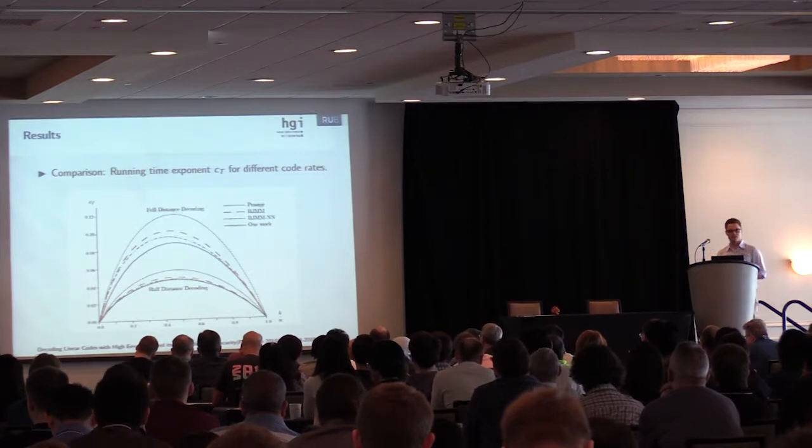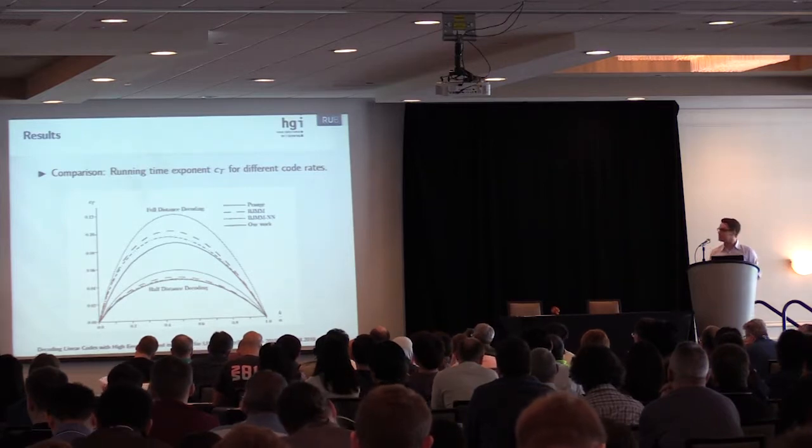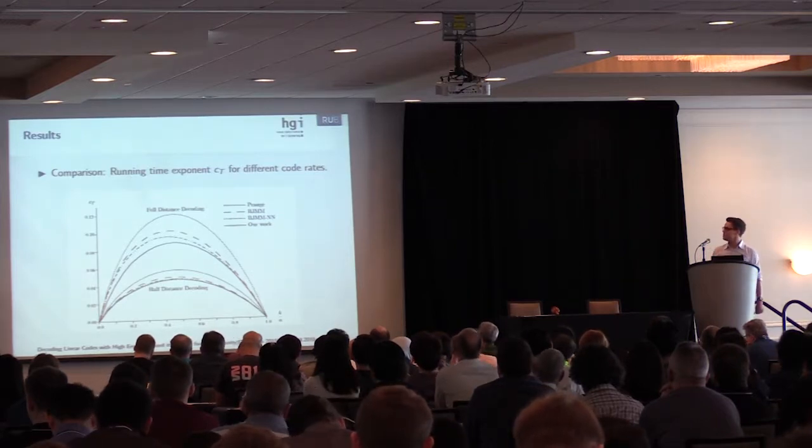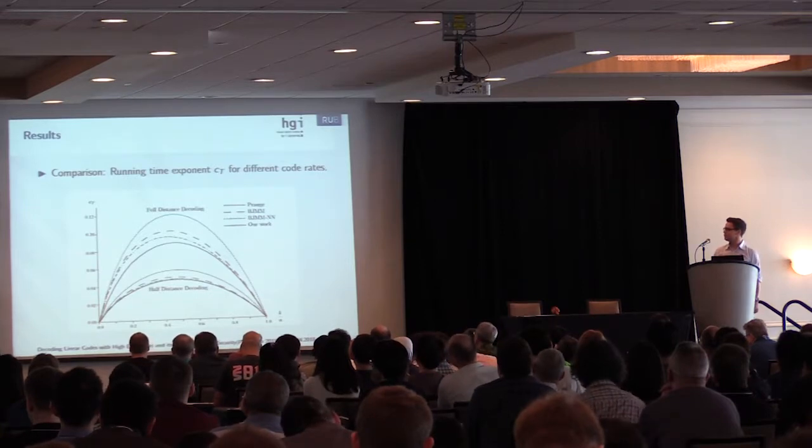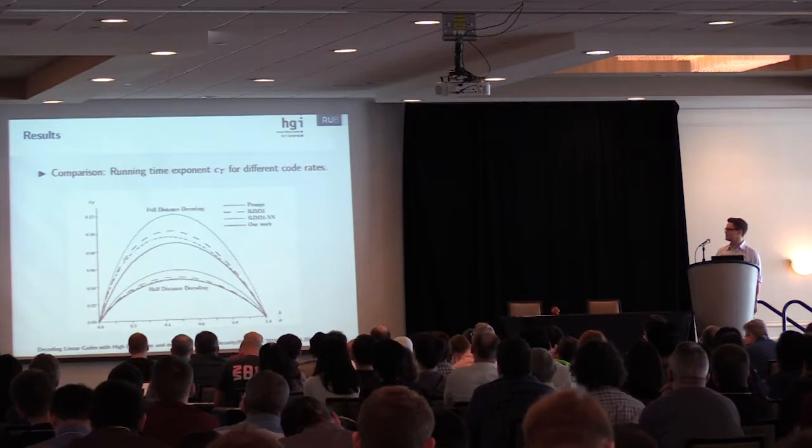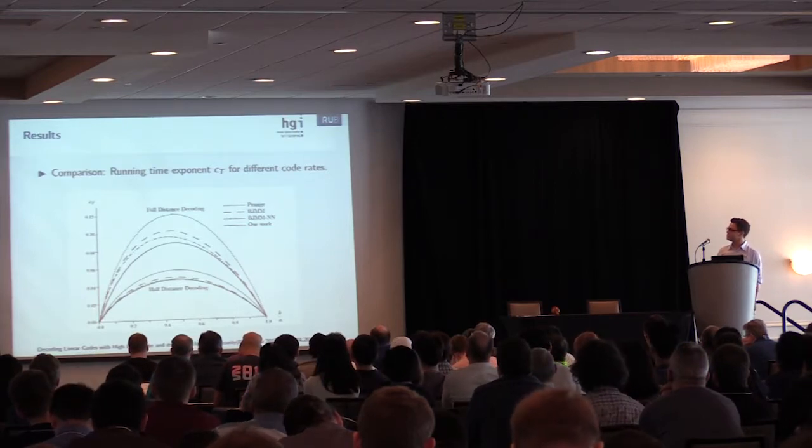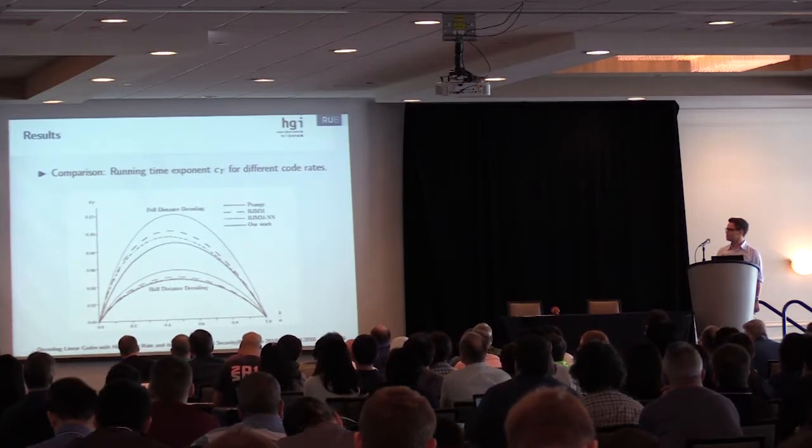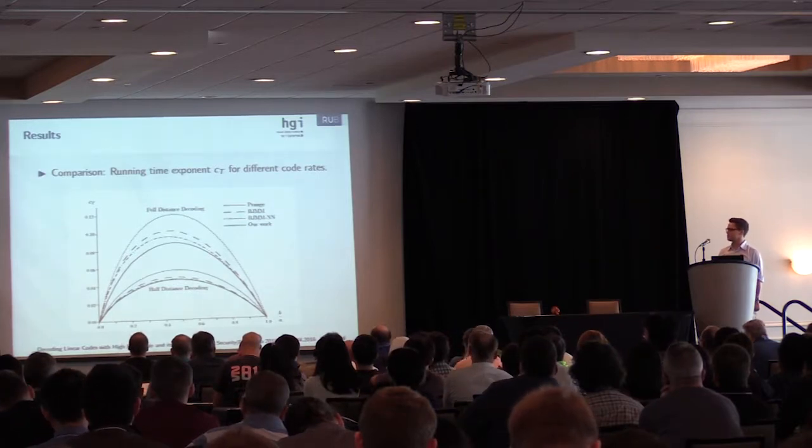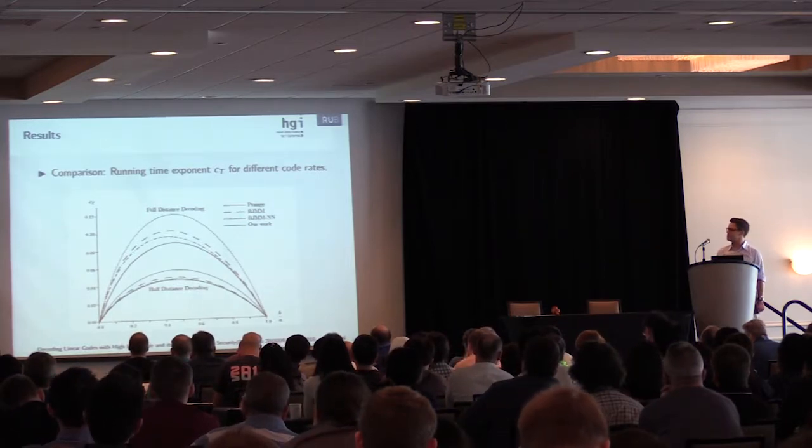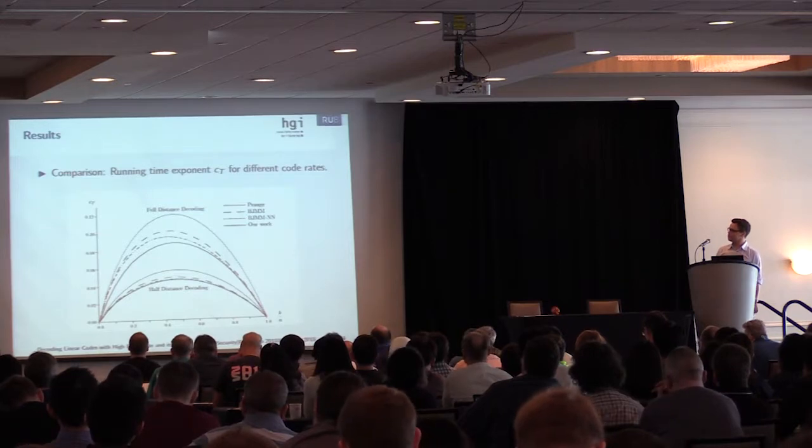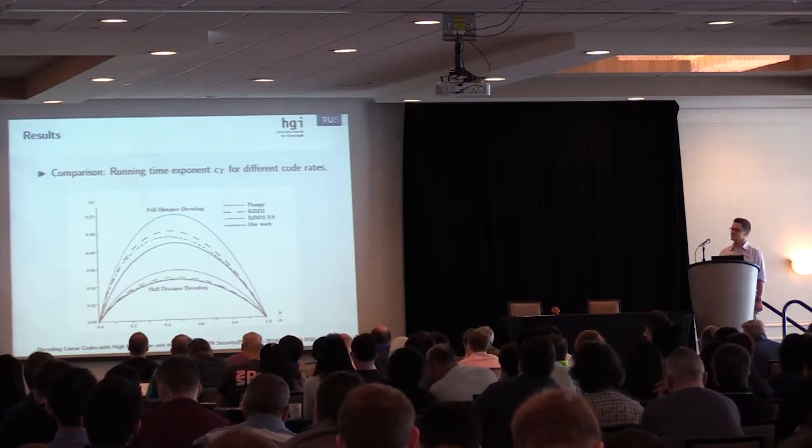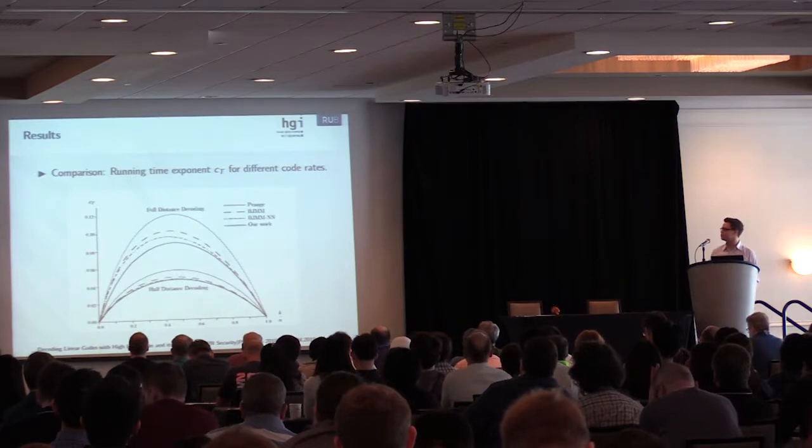Let's talk about some results. Here we have the running time exponent over the code rate k over n for full distance decoding at the top curves and for half distance decoding at the bottom for different algorithms. As you can see, the BJMM always beats Prange, and our algorithm always gives a lower running time exponent over the whole spectrum of code rates. The gap is quite huge for full distance decoding but for half distance decoding it's only a minor gap.